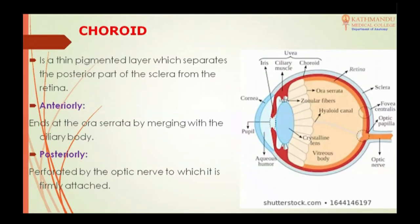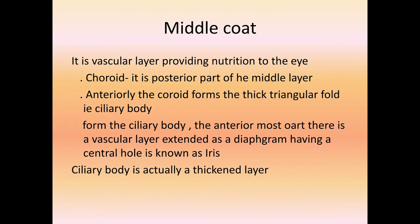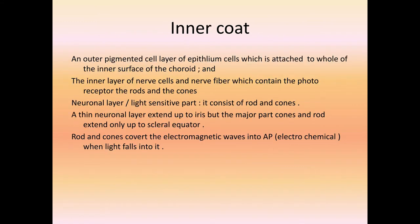In the middle layer, the posterior part is known as the choroid. Anteriorly, it forms a thick triangular fold known as the ciliary body. From the ciliary body, in the anterior most part, there is a vascular layer which extends as a diaphragm with a central hole in it. This diaphragm is known as the iris.